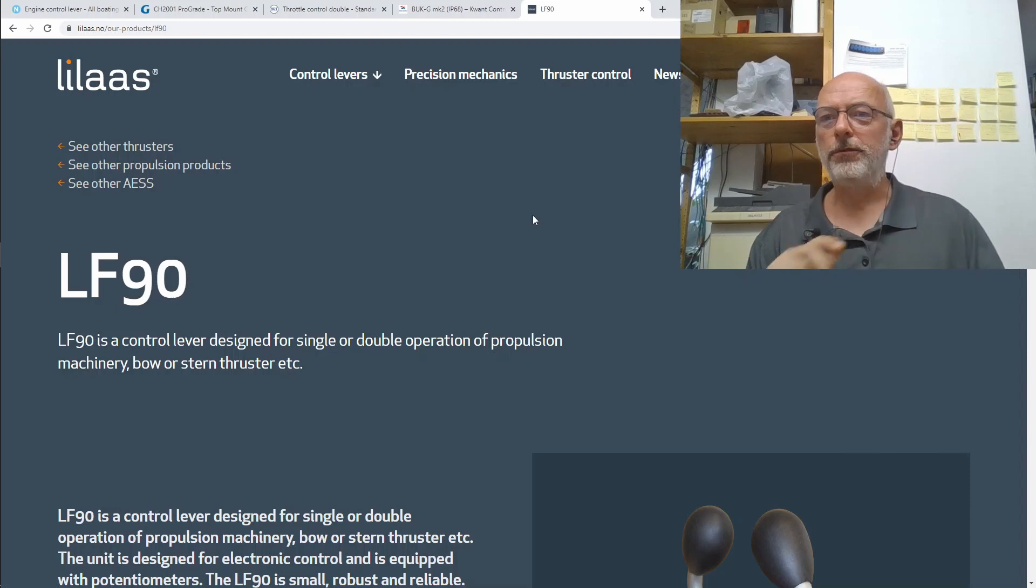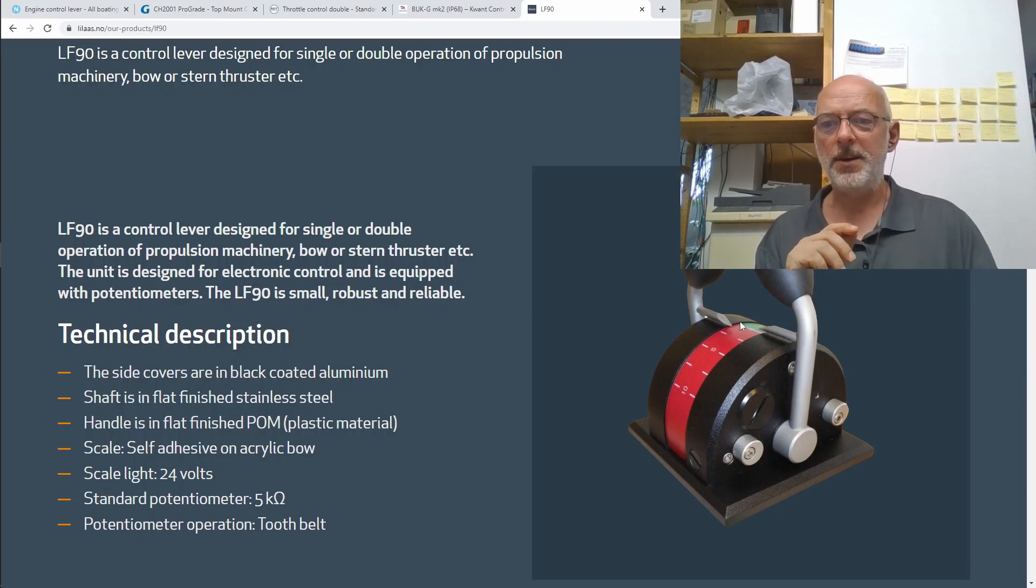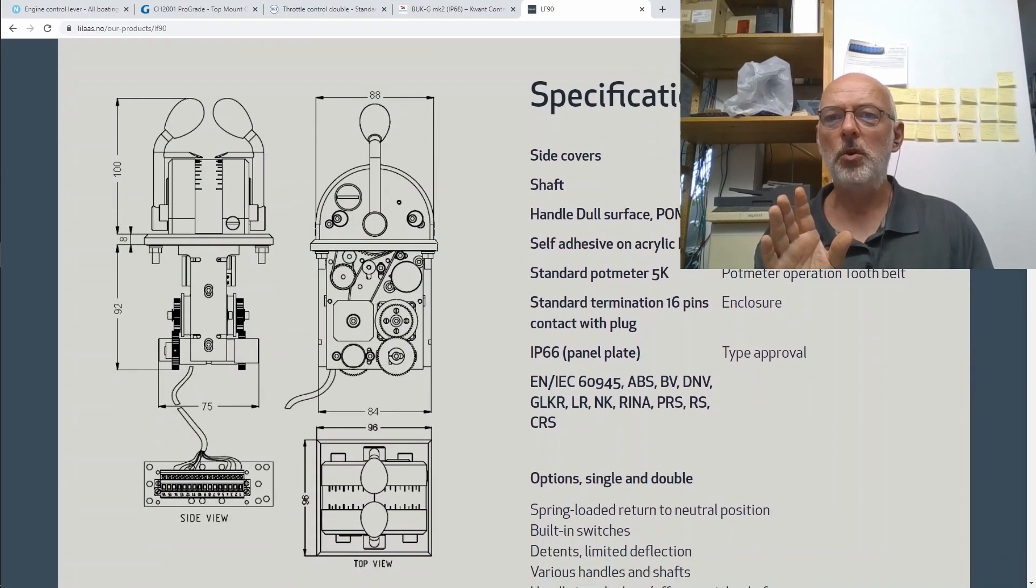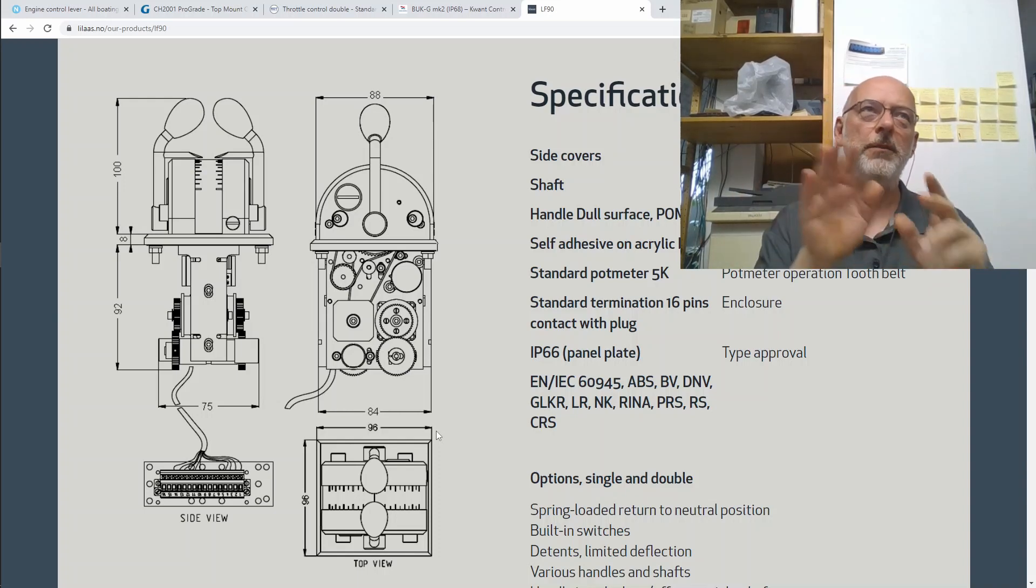Here we have an offering also for commercial vessels from Lilas, the LF90. That's not IP68, I just like the form factor because this is really nice and small. We have some drawings at the bottom: it's about 10 centimeters (4 inches) in height, about 96 millimeters total width, and depth is also 10 centimeters. So it's 10 by 10 by 10 centimeters or 4 by 4 by 4 inches, and that's the size I'm really aiming for.